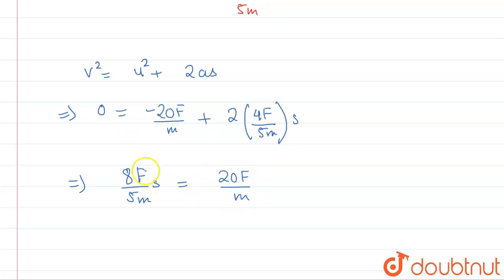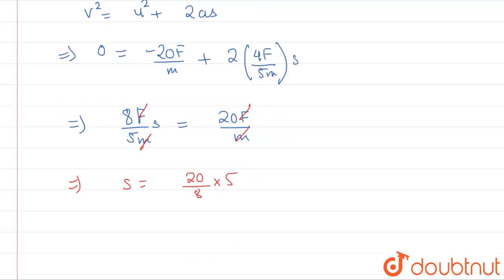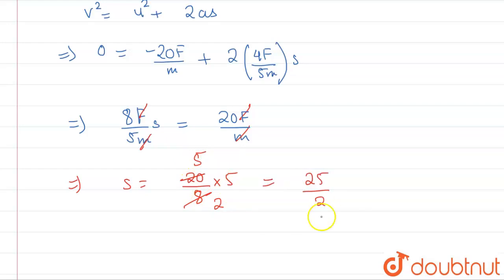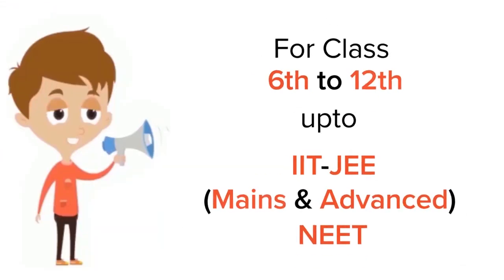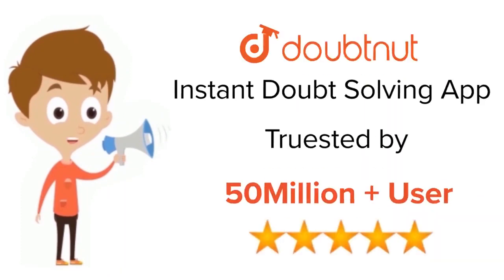So s = 20/8 × 5 = 100/8 = 25/2 = 12.5 meters. The answer is option D, that is 12.5 meters. For Class 6 to 12, IIT JEE and NEET level, trusted by more than 5 crore students — download DoubtNet today.